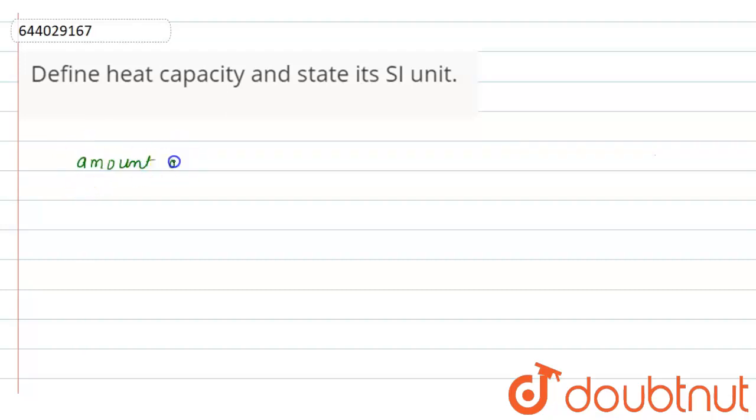So amount of heat energy given or released in changing the temperature of unit mass by 1 degree celsius or by 1 kelvin. And formula for specific heat is S equals to Q by M delta T.